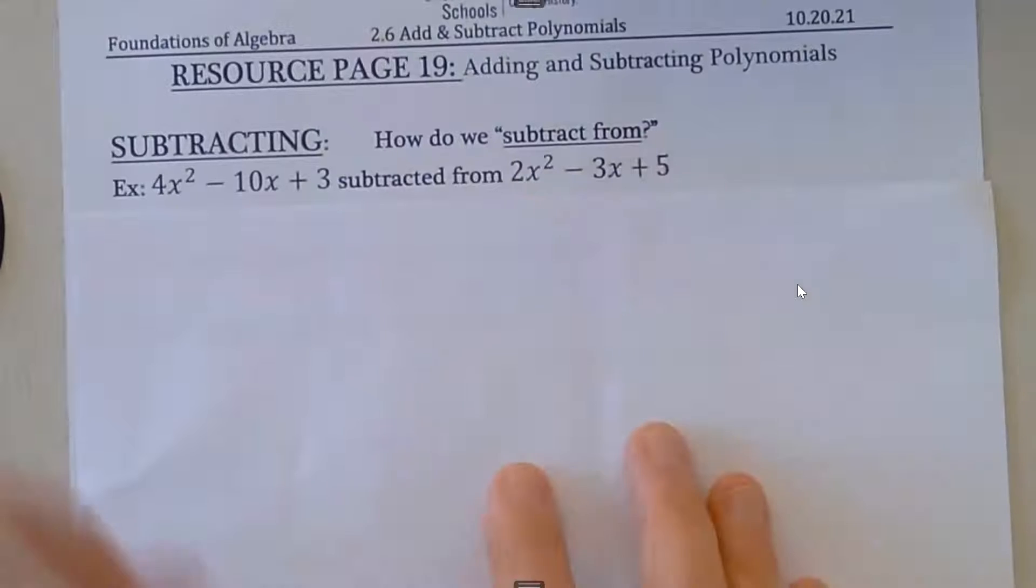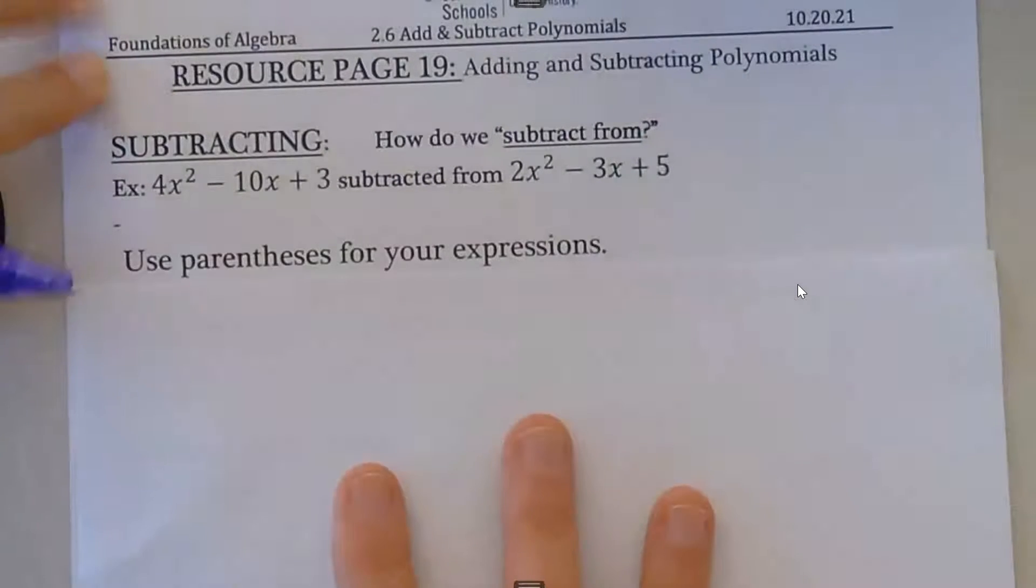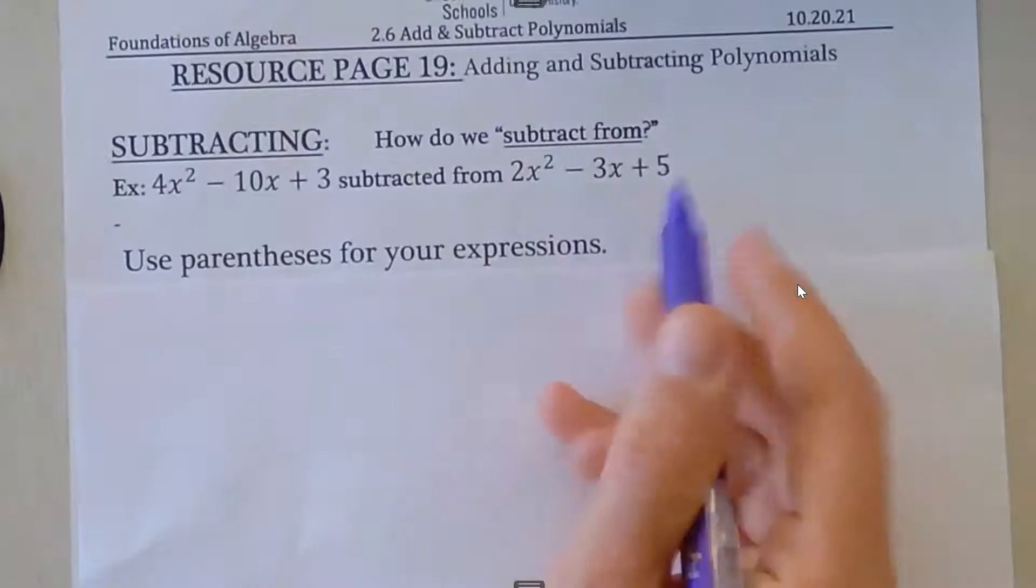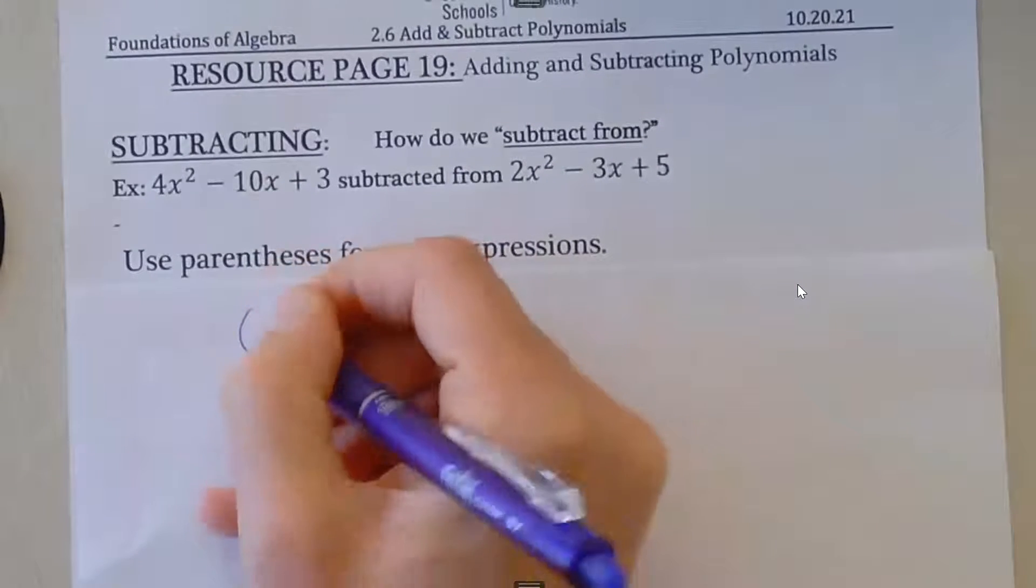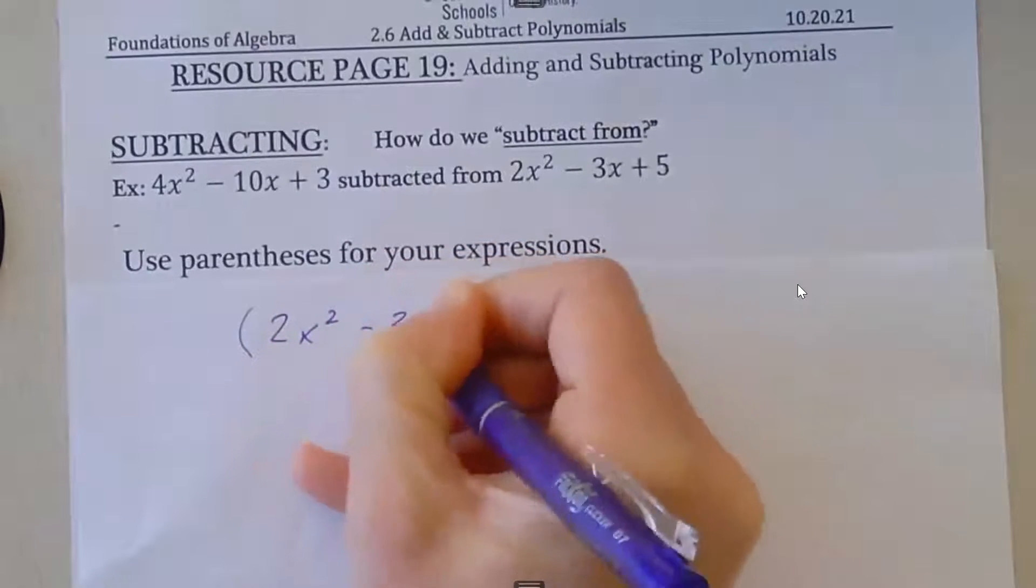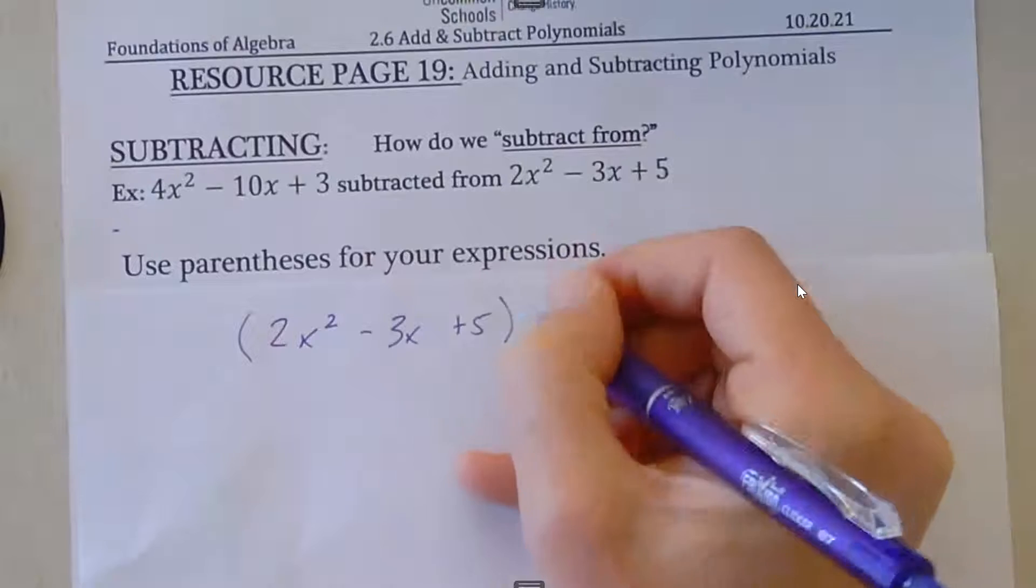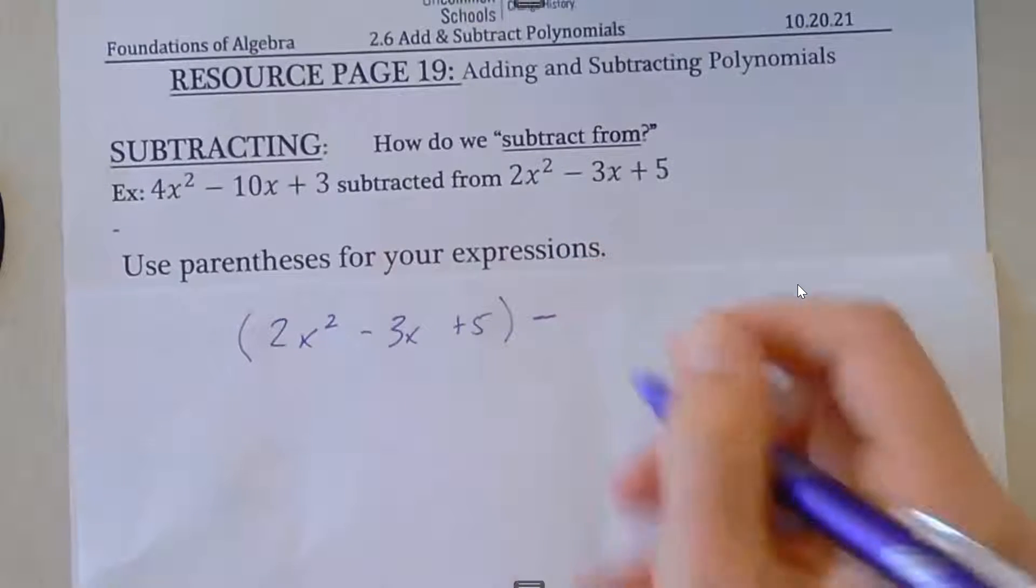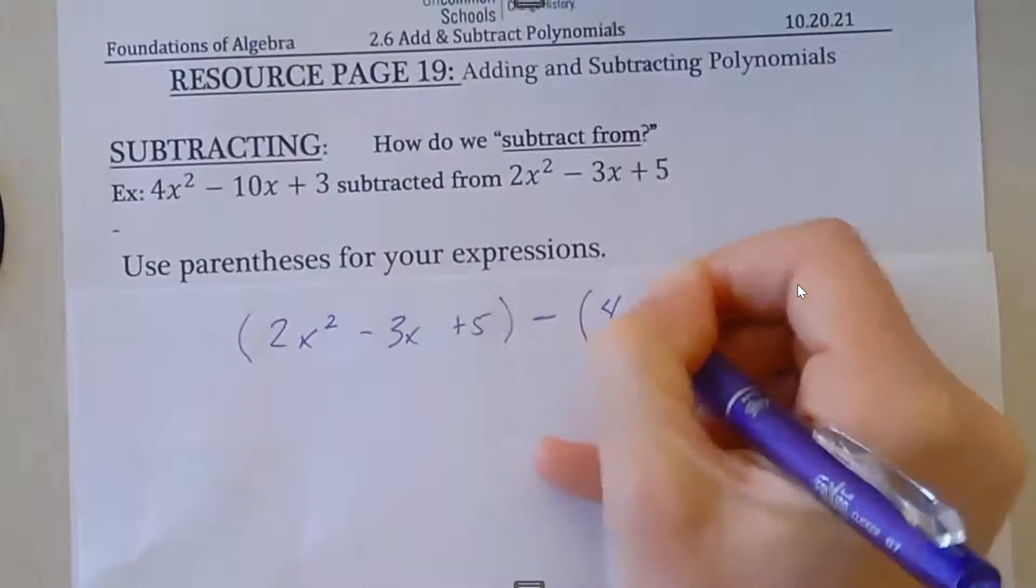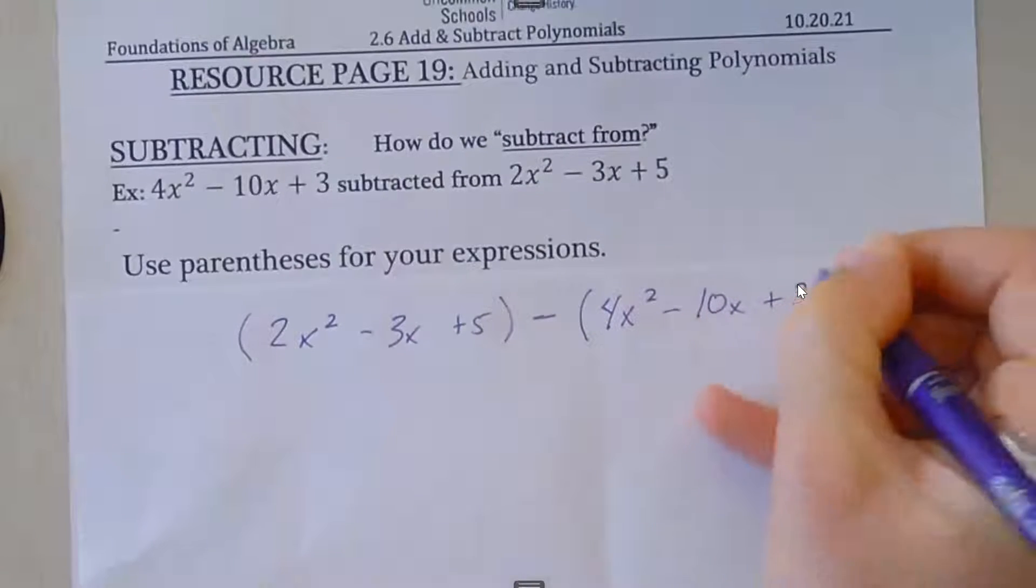When we subtract or add, we're going to use parentheses to write our expressions. So we said this would come first, this is 2x² - 3x + 5, minus parentheses 4x² - 10x + 3.